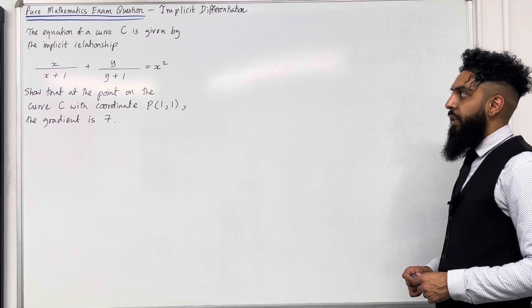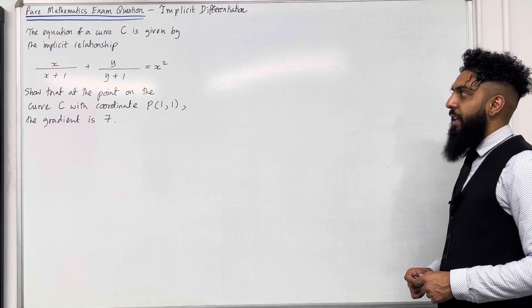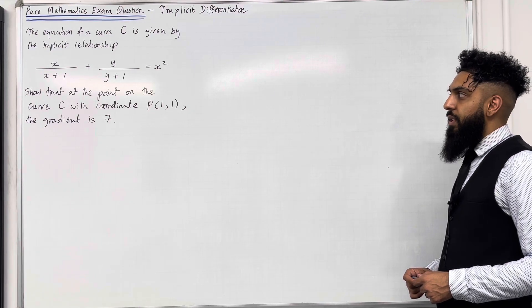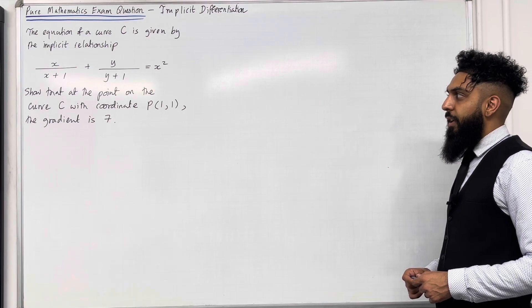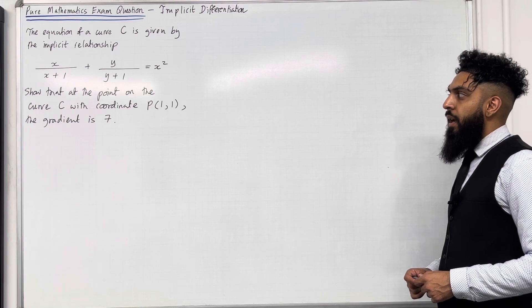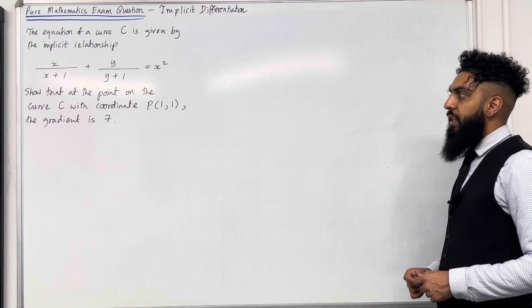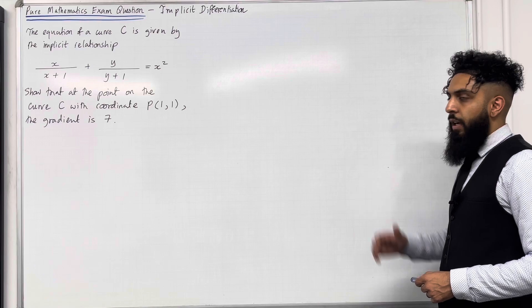Here is the exam question. The equation of the curve C is given by the implicit relationship x over x plus 1, plus y over y plus 1, equal x squared. Show that at the point on the curve C with coordinate P, 1, 1, the gradient is 7.